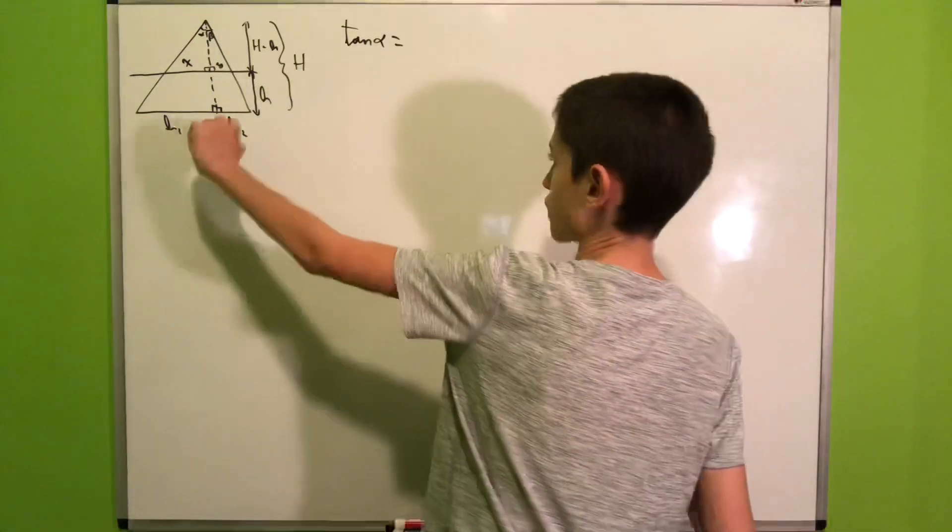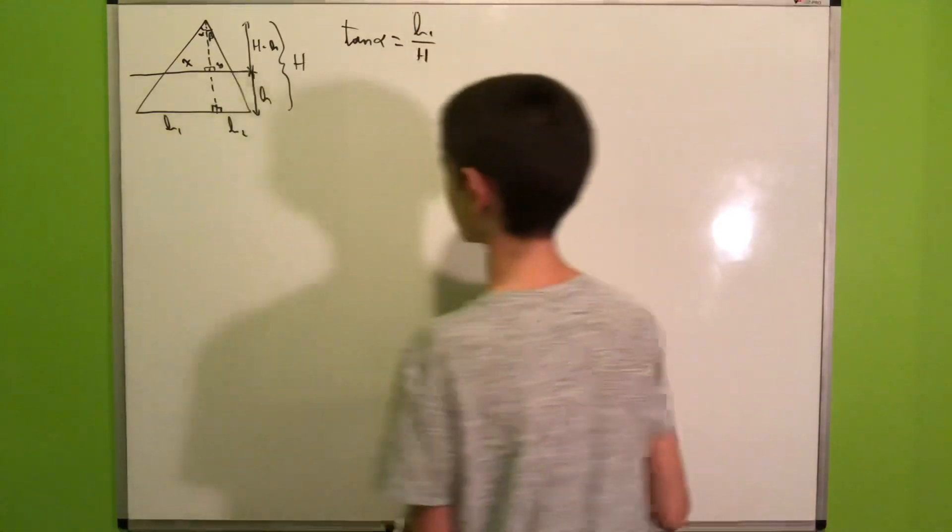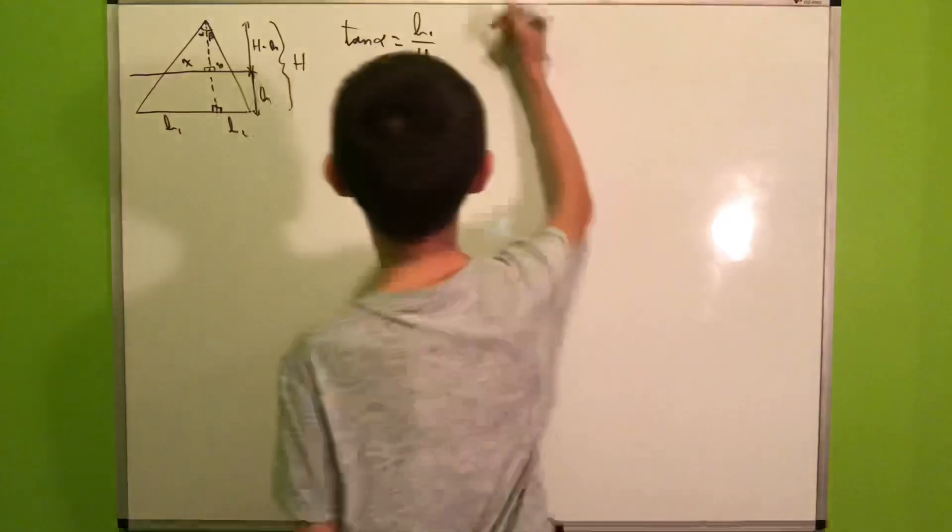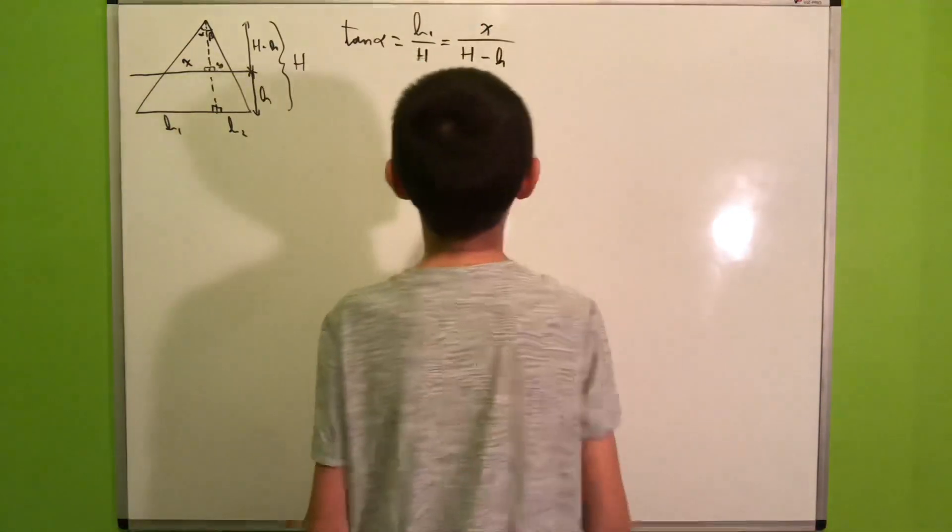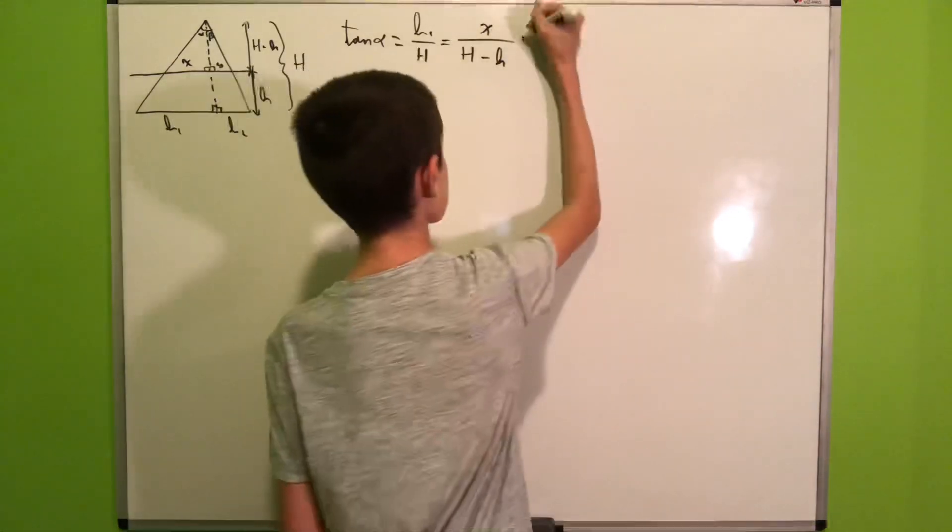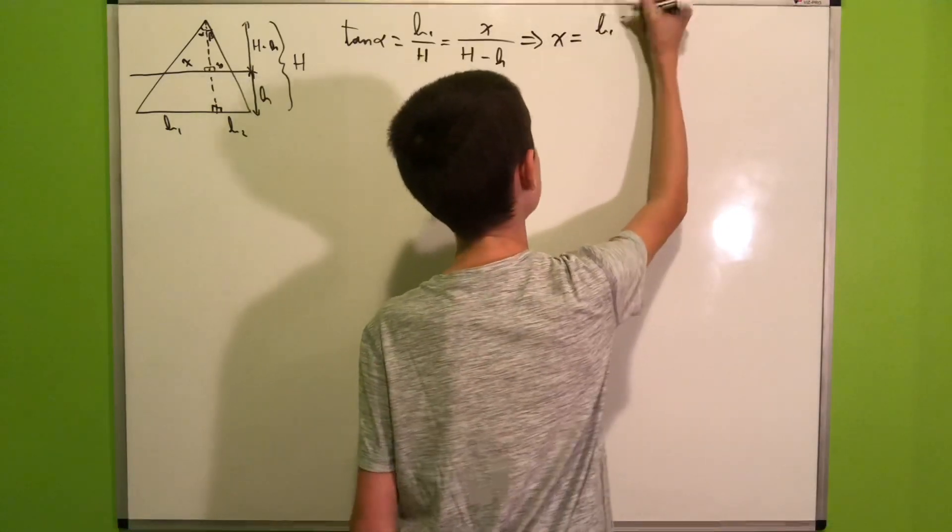Let's focus on the tangent of alpha first. In the larger triangle we have that this is equal to b1 over H, and in the smaller triangle we have that this is equal to x over H minus h. We can multiply both sides by H minus h to get that x is b1 times (H minus h) over H.